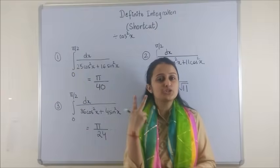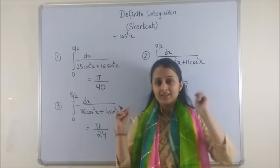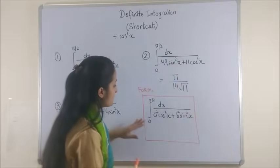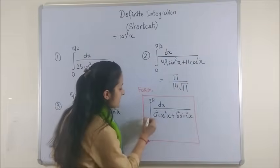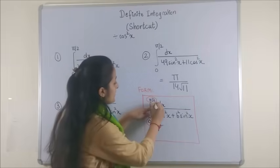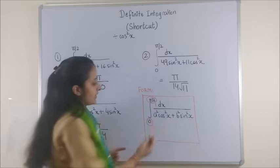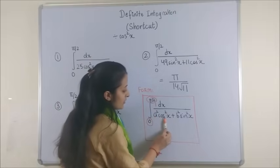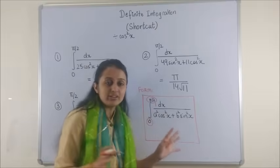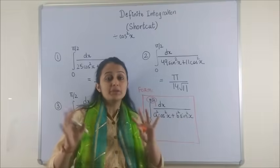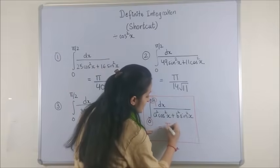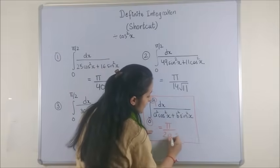Want to know how I did it in just two seconds? Well, let's check out the trick. If you ever come across this form where the lower limit is 0 and the upper limit is pi by 2, the numerator has just 1 divided by a square cos square x plus b square sin square x. It is not important that these a square and b square should be perfect squares. The answer to such a question is always pi upon 2ab.